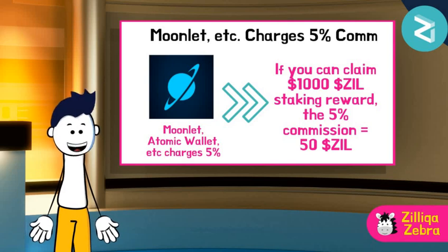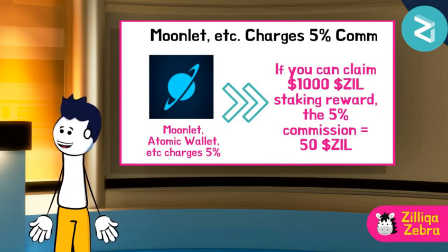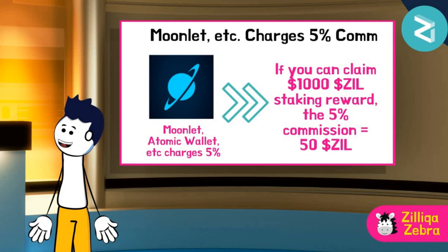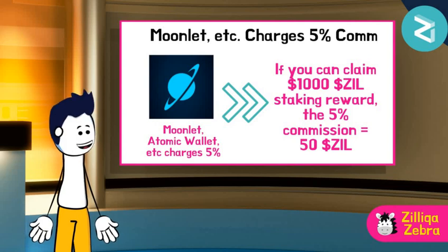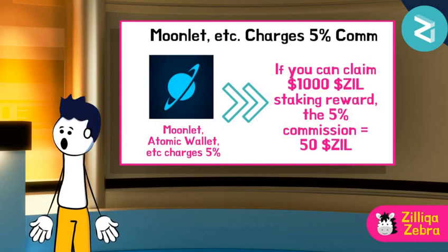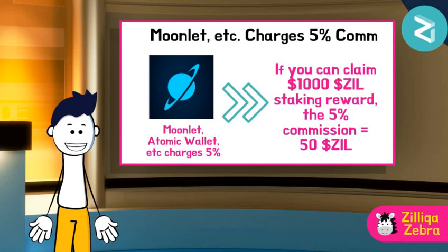To simplify this, Moonlit's 5% staking commission is charged only on your APR, meaning that if you can claim 1,000 ZIL as a staking reward, the staking commission would translate to 50 ZIL.